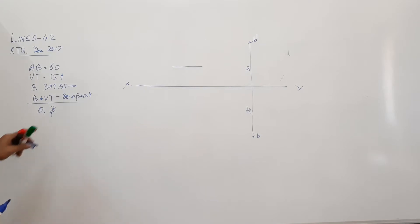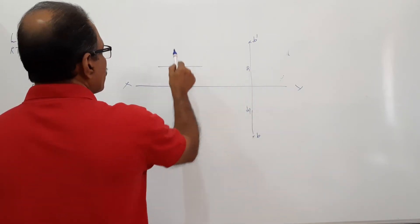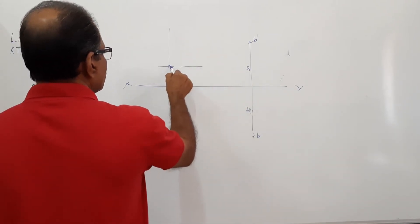You are also set, the projectors through VT and B are 80mm apart. So 80mm apart, draw a vertical projector. This is VT.